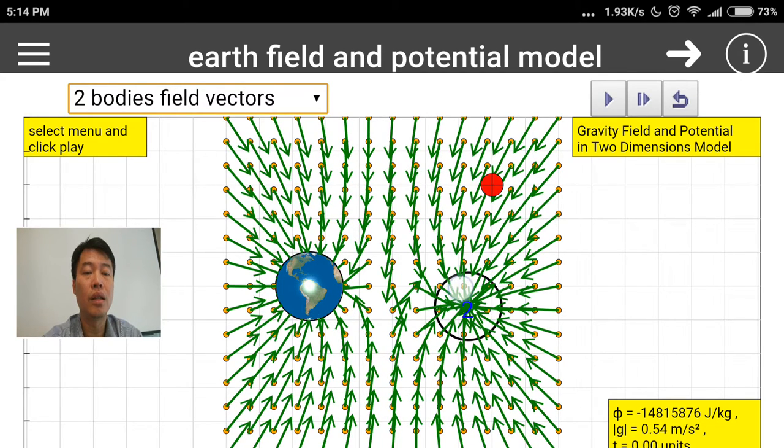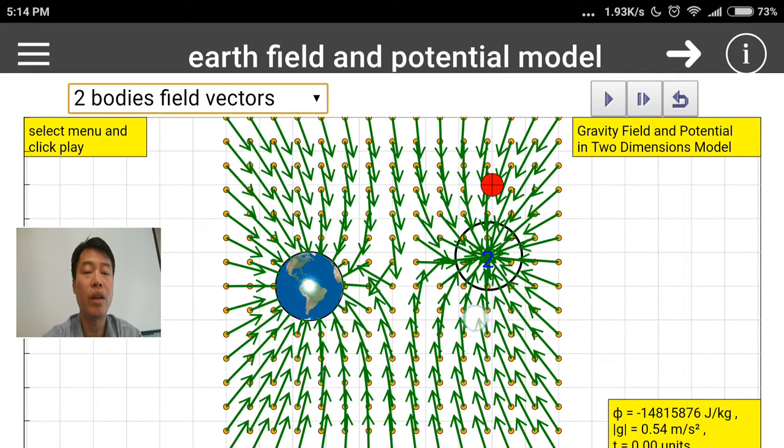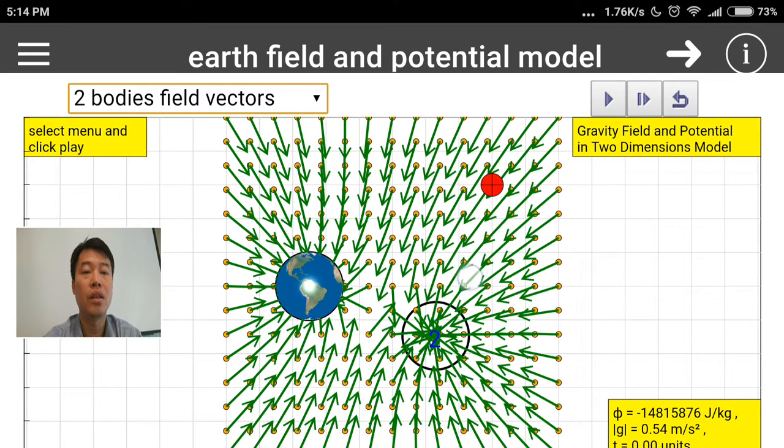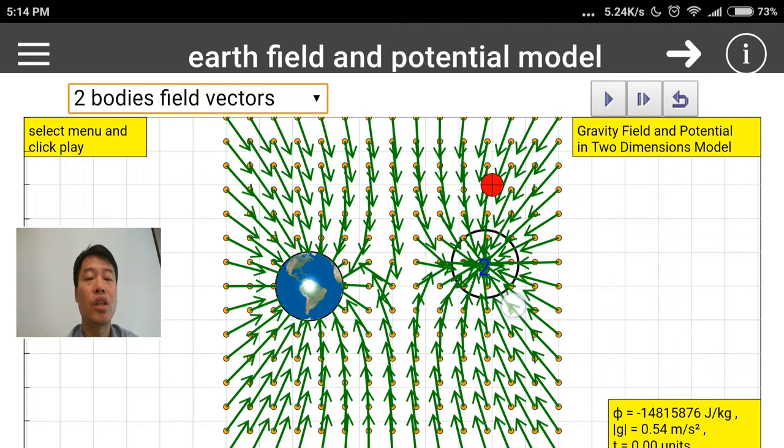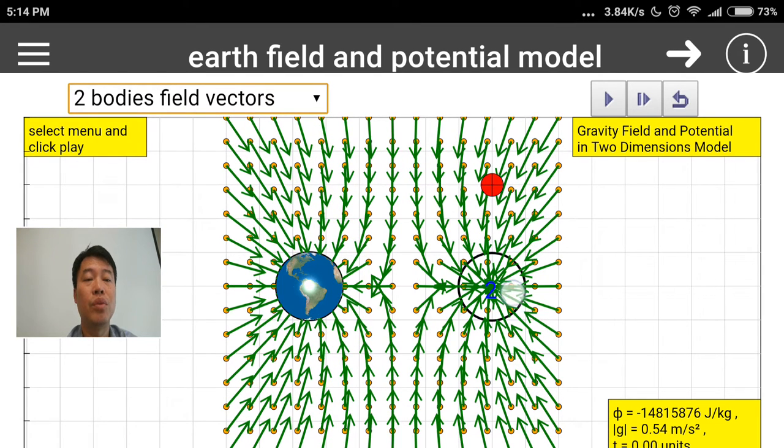So if you were to draw and somewhat connect all these field vectors, you can somewhat get field lines. So this is another kind of representation called field vectors which is similar to field lines.